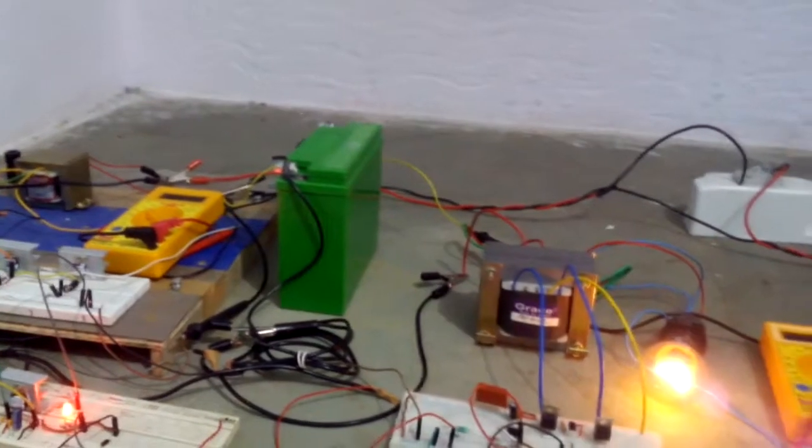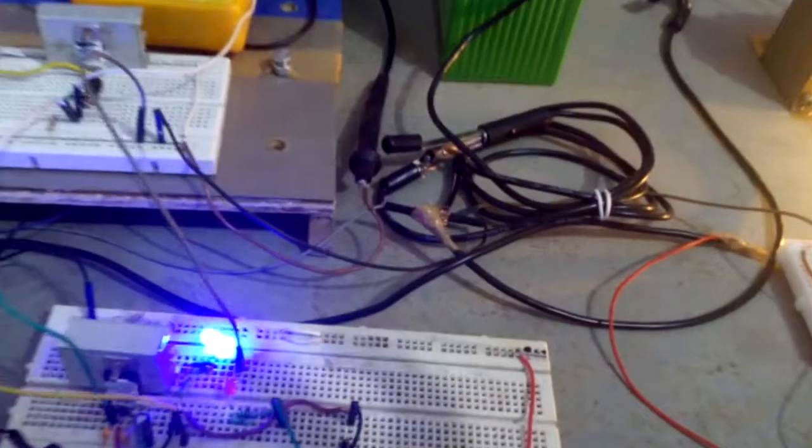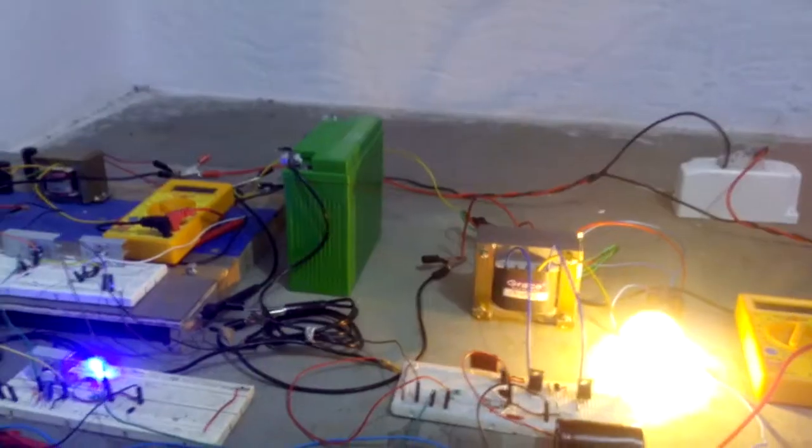Here we can see our blue LED turn on and our bulb is glowing. Its output voltage is about 230 volts. So this is the whole setup of the offline UPS.